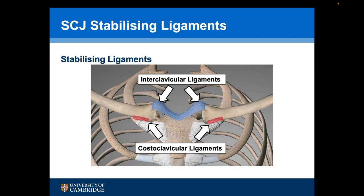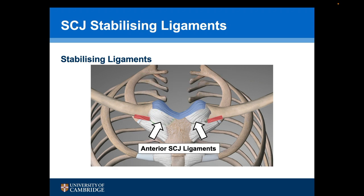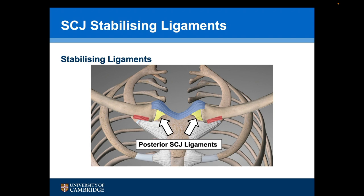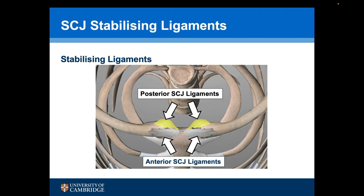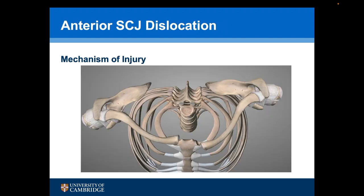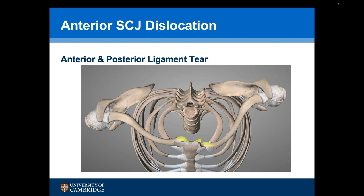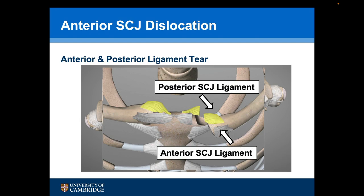The ligaments that stabilise the sternoclavicular joint are the interclavicular ligaments and the costoclavicular ligaments, which generally prevent superior translation of the medial end of the clavicle, and the anterior and posterior sternoclavicular joint ligaments, which can be seen in this axial view, and are responsible for anterior and posterior stability. When the medial end of the clavicle is dislocated anteriorly, the anterior sternoclavicular ligament is torn, and on occasion the posterior sternoclavicular joint ligament as well.